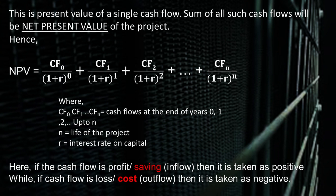The sum of all such cash flows will be the Net Present Value of the project. Hence, Net Present Value can be given by the formula shown in the slide: NPV is equal to CF0 divided by (1 + r) raised to 0, plus CF1 divided by (1 + r) raised to 1, and so on. Here, CF means cash flows, and CF0, CF1, CF2 means cash flows at the end of the 0th, 1st, and 2nd year, and so on.